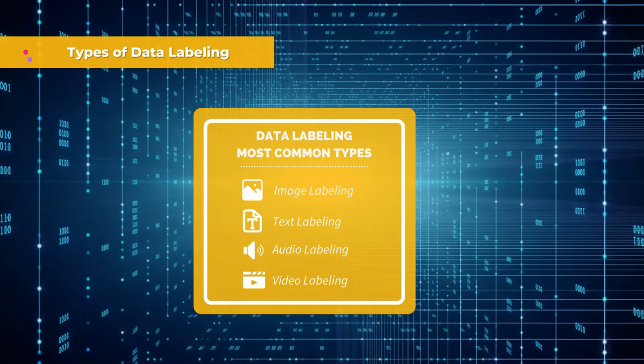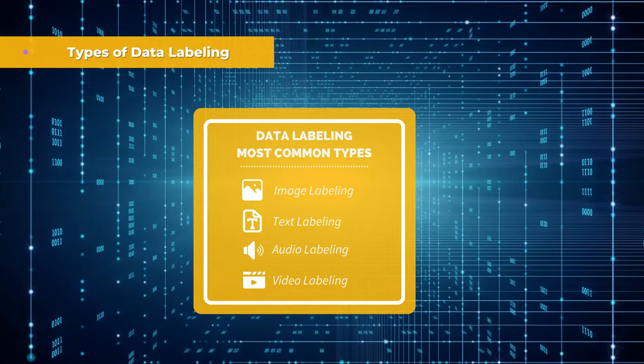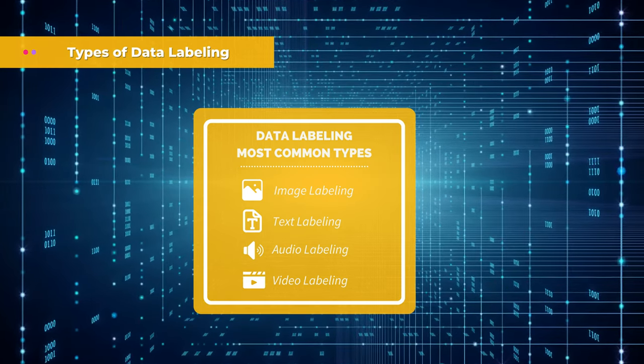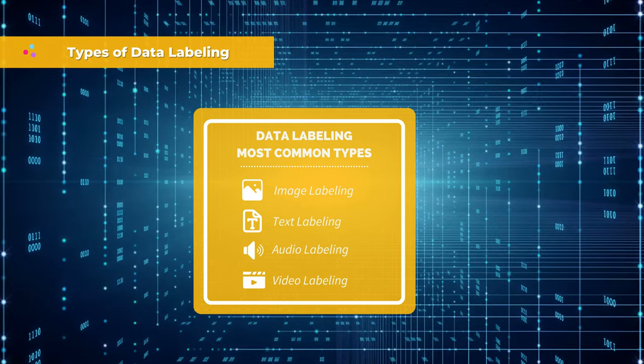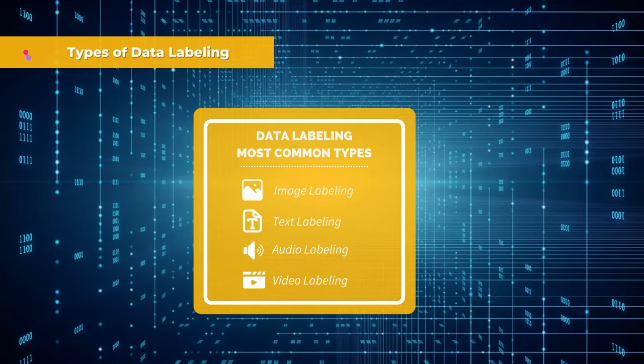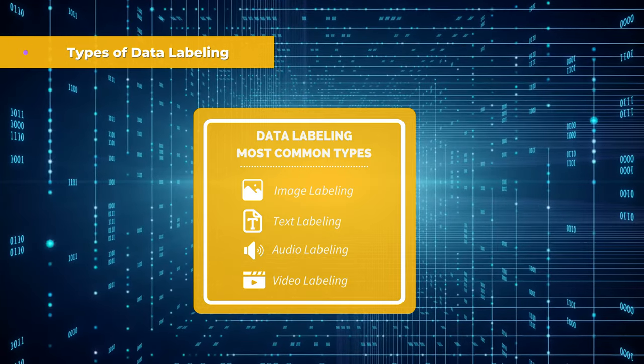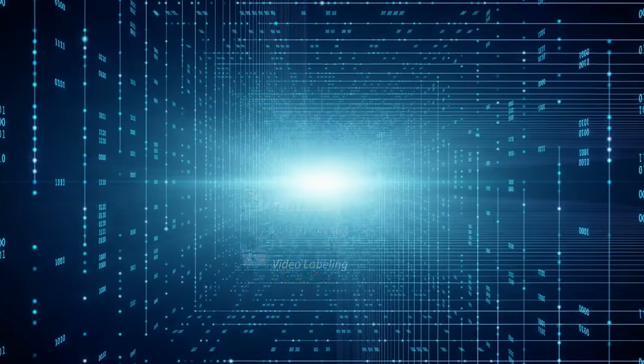Audio labeling involves transcribing speech to text or identifying specific sounds. Video labeling involves identifying objects, people, or events in videos.